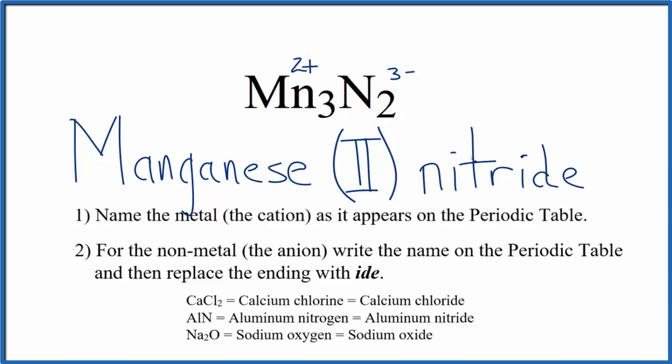If you were given the name and asked to write the formula, you'd know that each manganese would be 2 plus because of this Roman numeral 2. And you could look at the charge on the nitride, make sure everything adds up to 0.